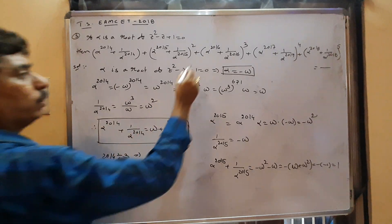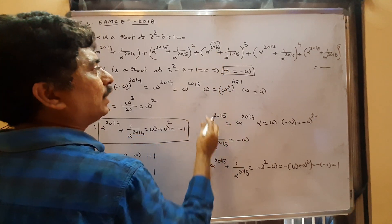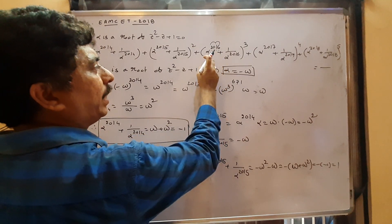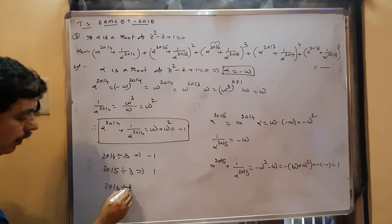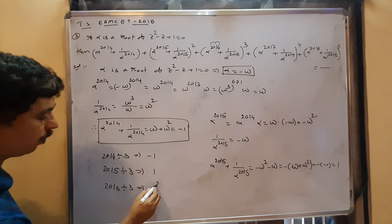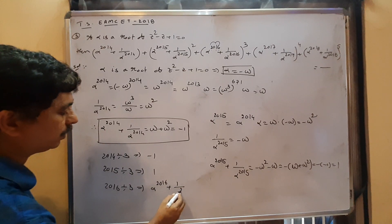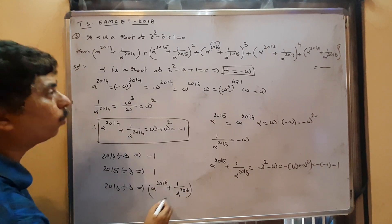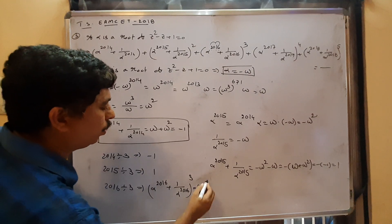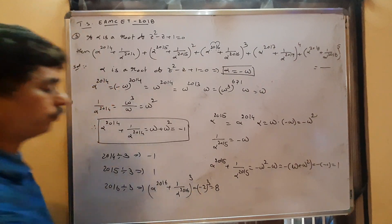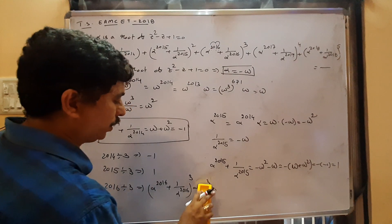For 2016: digit sum = 2+0+1+6 = 9, divisible by 3. So α^2016 + 1/α^2016 results in (−1+1)³ type calculation: 2³ = 8... the value is −2 whole cubed = −8... working through: (α + 1/α)^2016 relates to 2 cube = 8.